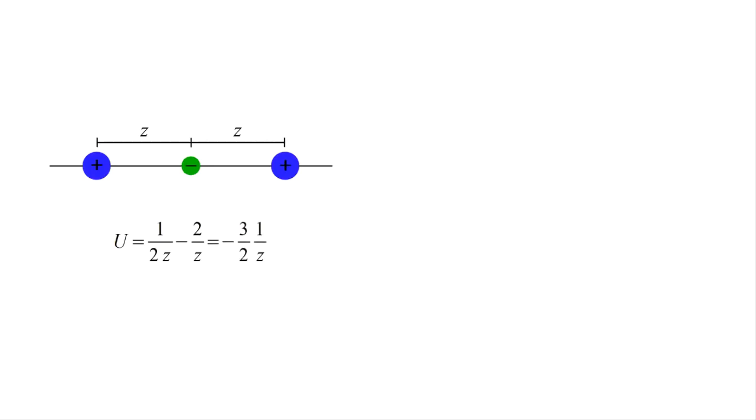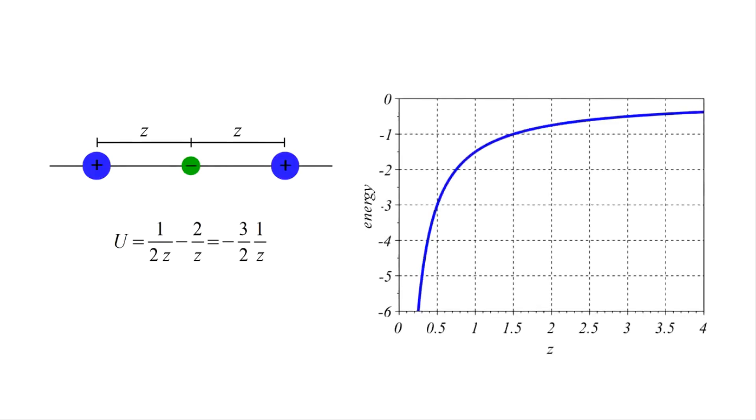These combine to give a total potential of minus 3 halves over z, which decreases with decreasing z. As a static configuration will always tend towards the state of lowest potential energy, we can see there's no equilibrium arrangement for a non-zero value of z.